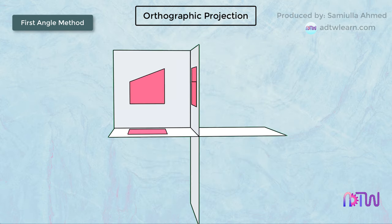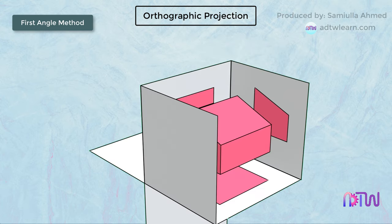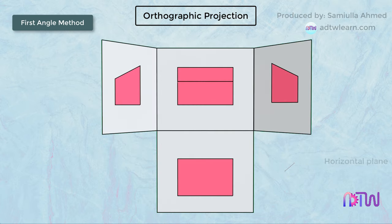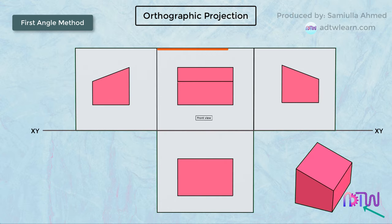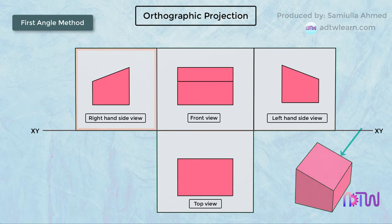For drawing these projections onto the drawing sheets, we follow the rule of orthographic projection. The horizontal plane is rotated in the clockwise direction and the profile planes are also unfolded. By doing so, the front view of the object is on top, the top view is on the bottom, the left-hand side view is on the right side of the front view, and the right-hand side view is on the left side of the front view. This is how we draw on drawing sheets using the first angle method.